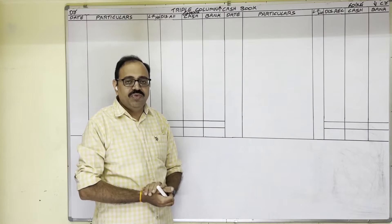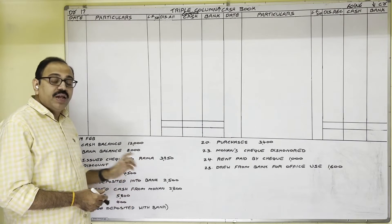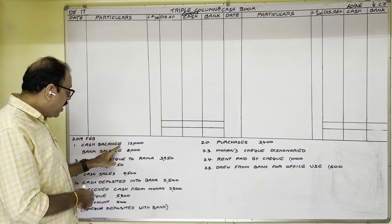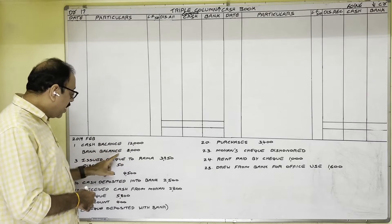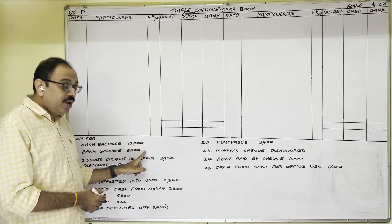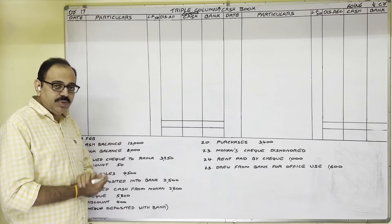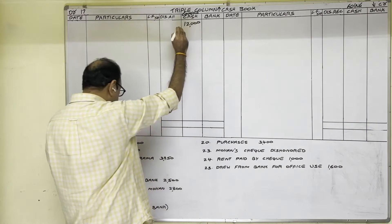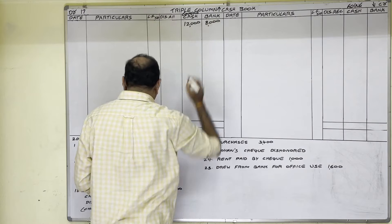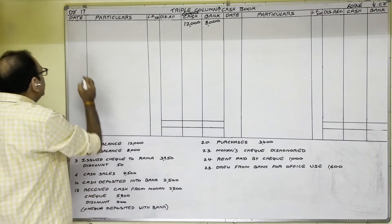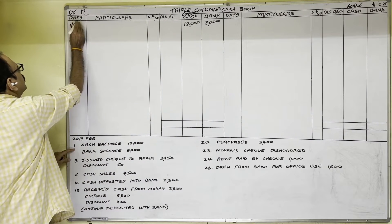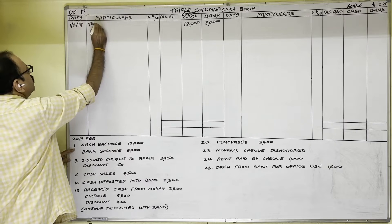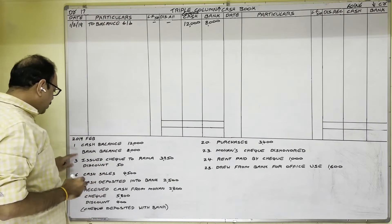Now we will write the opening balances for problem 17. On 1st February 2019, cash balance is 12,000 and bank balance is 8,000 — these are the opening balances. Since opening balances go on the debit side, write 12,000 in the cash column and 8,000 in the bank column. The date is 1st February 2019, and for opening balances write 'to balance brought down'.